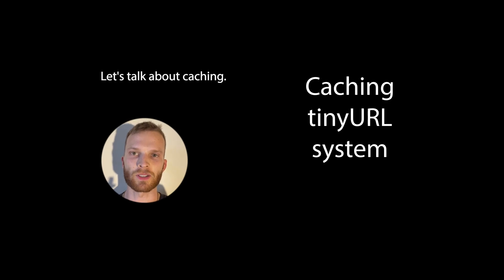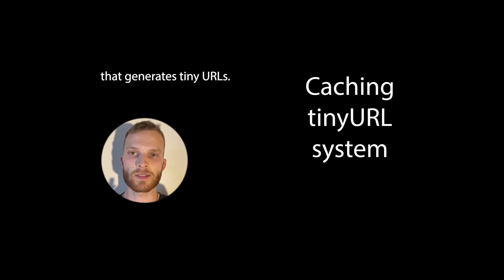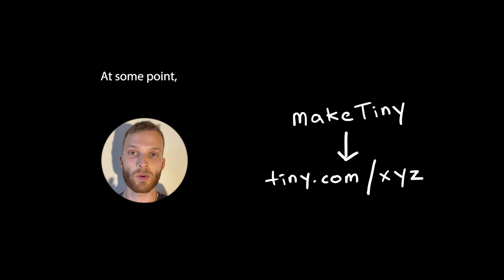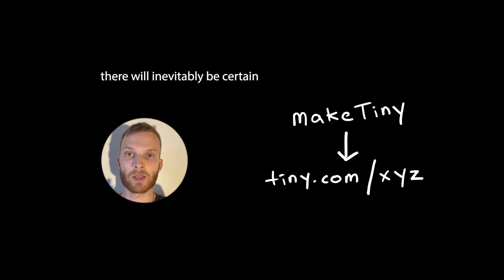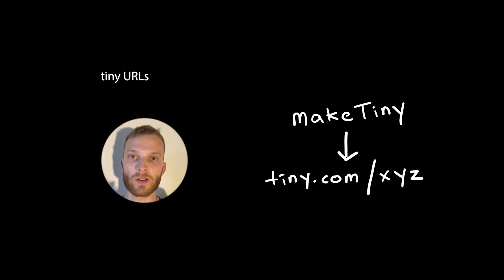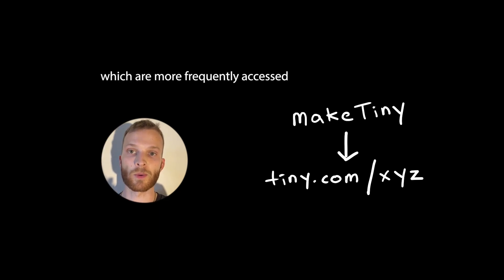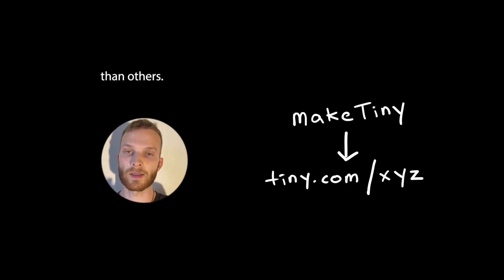Let's talk about caching. We've got a system that generates tiny URLs. At some point there will inevitably be certain tiny URLs which are more frequently accessed than others.